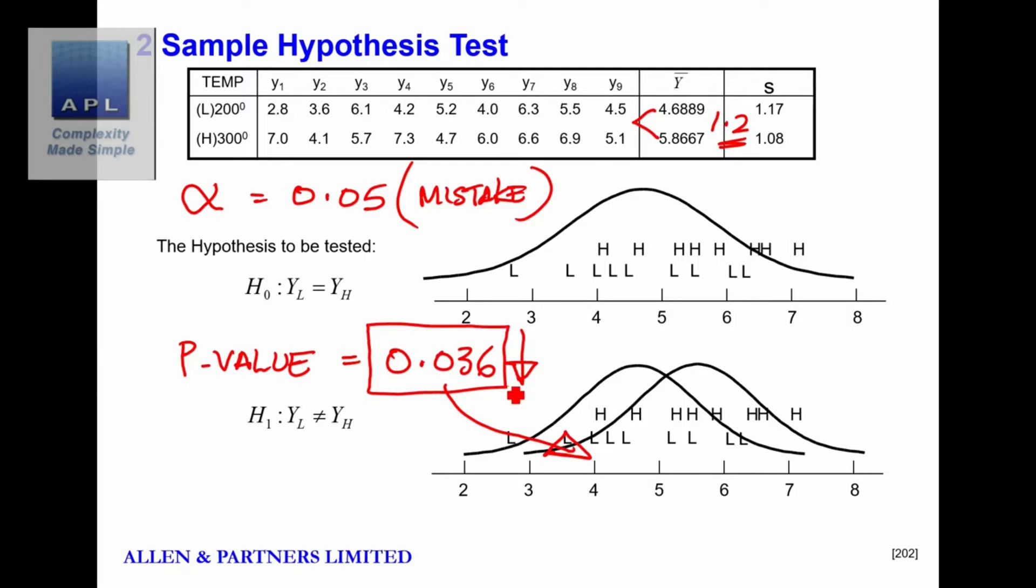Which is what this number is. You also have to get practical significance, and that's a different judgment. That's you judging whether a 1.2 shift is useful to you. So that is the t-test, the two-sample t-test produced by Minitab.